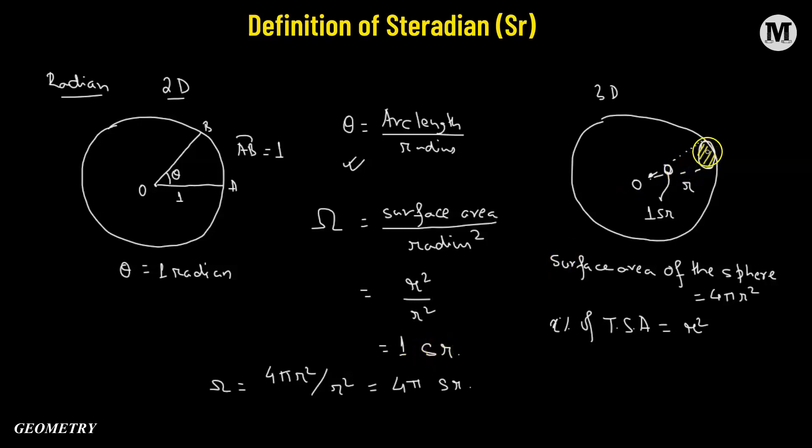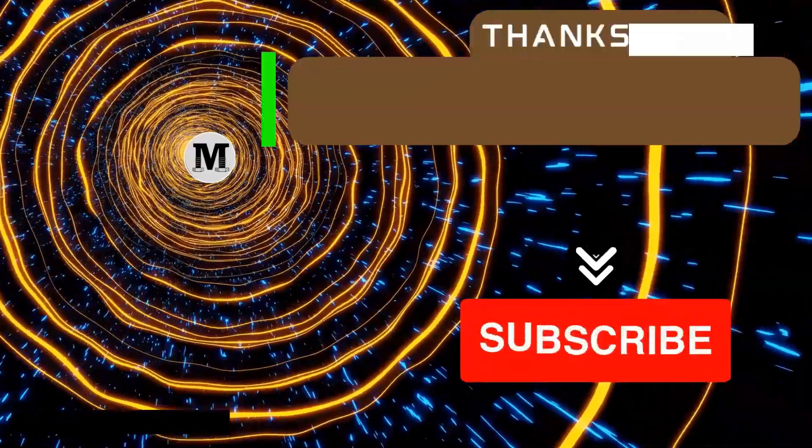The one steradian is defined when we take only a certain portion of the total surface area, such that this area of the small surface has R² value, such that when we divide it by the radius squared, we get an angle of one steradian at the center. And for the total sphere, the steradian measure is going to be 4π steradians.